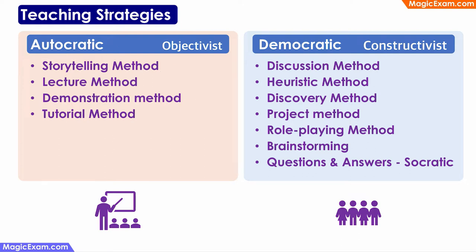Democratic teaching strategies are student-centric and are also called constructivist, because here students are actively constructing knowledge — they are not just passive listeners but actively participating in the teaching-learning process. The first method is the discussion method, where there is a discussion happening in the classroom, students and teacher actively participate, and together they learn something with a lot of interaction.